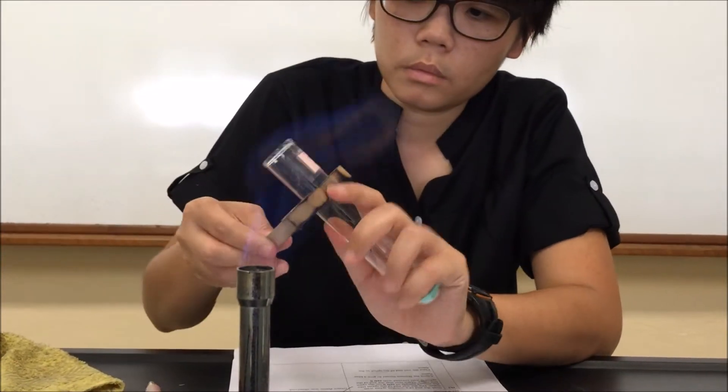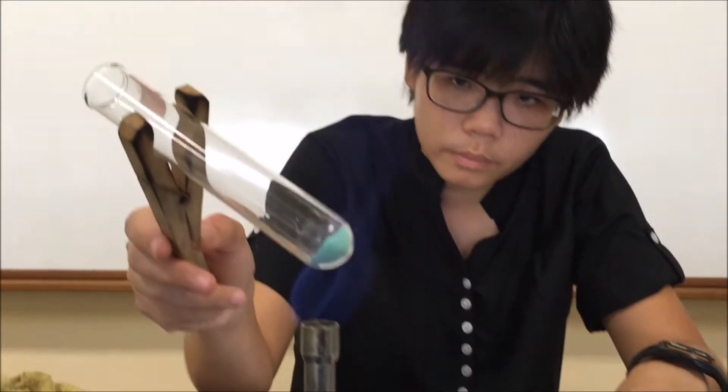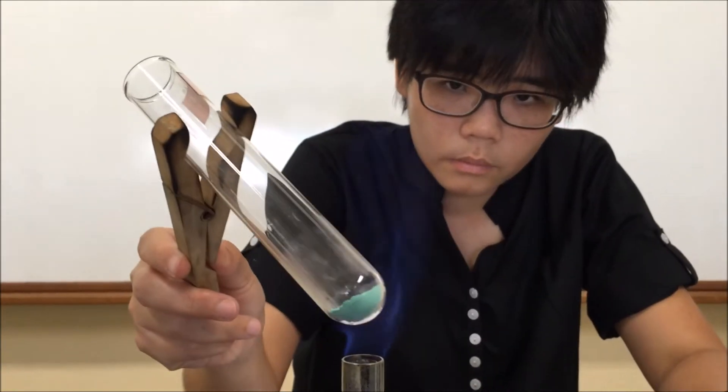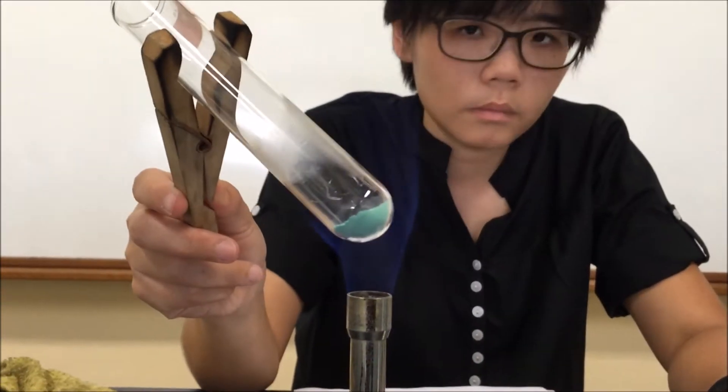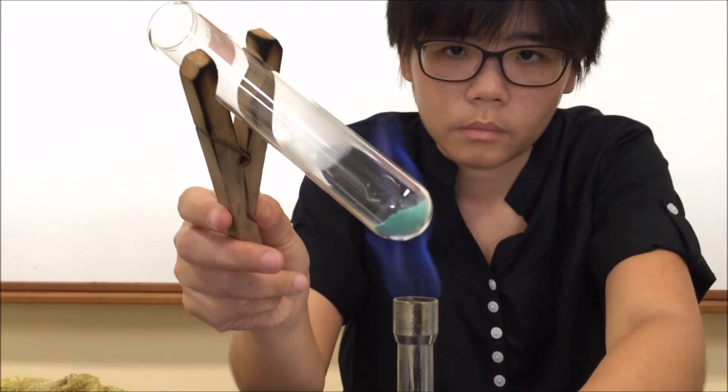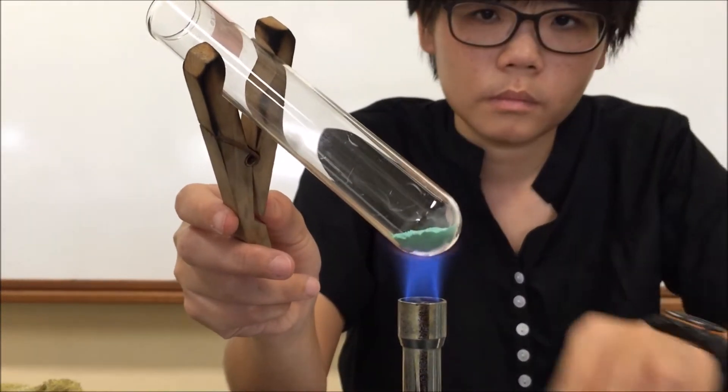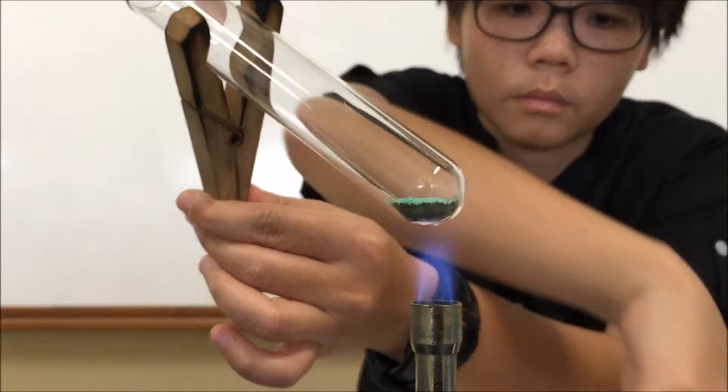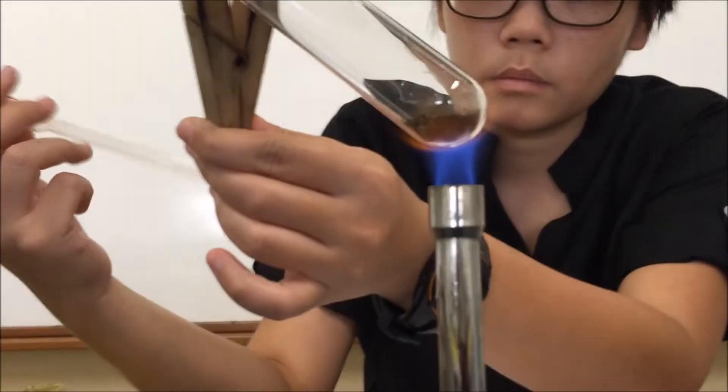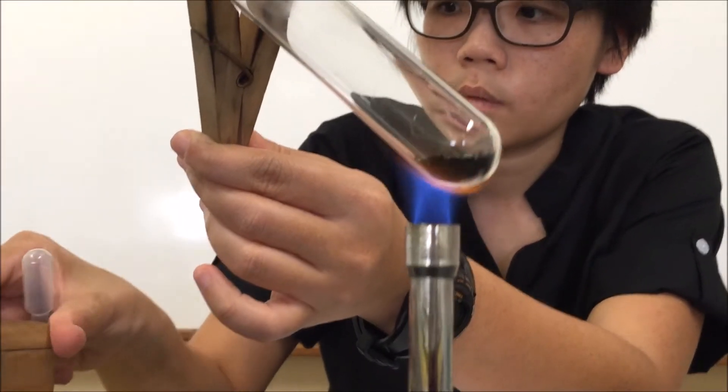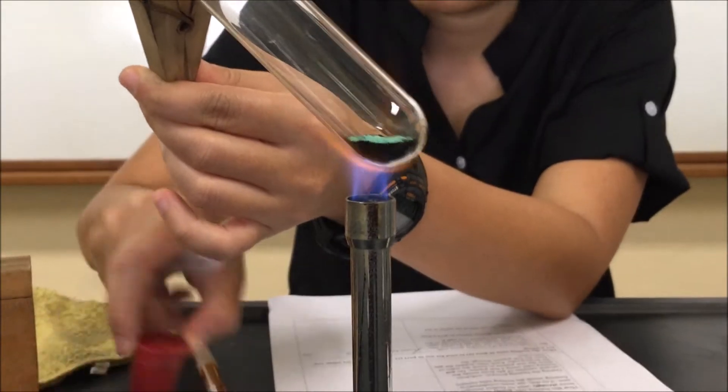Close the air hole, heat gently. And then open the air hole to heat it strongly. Always put the tube at the tip of the small triangle. So we should always pay attention to all the changes happening in the tube. So we see that the green solid is turning black.